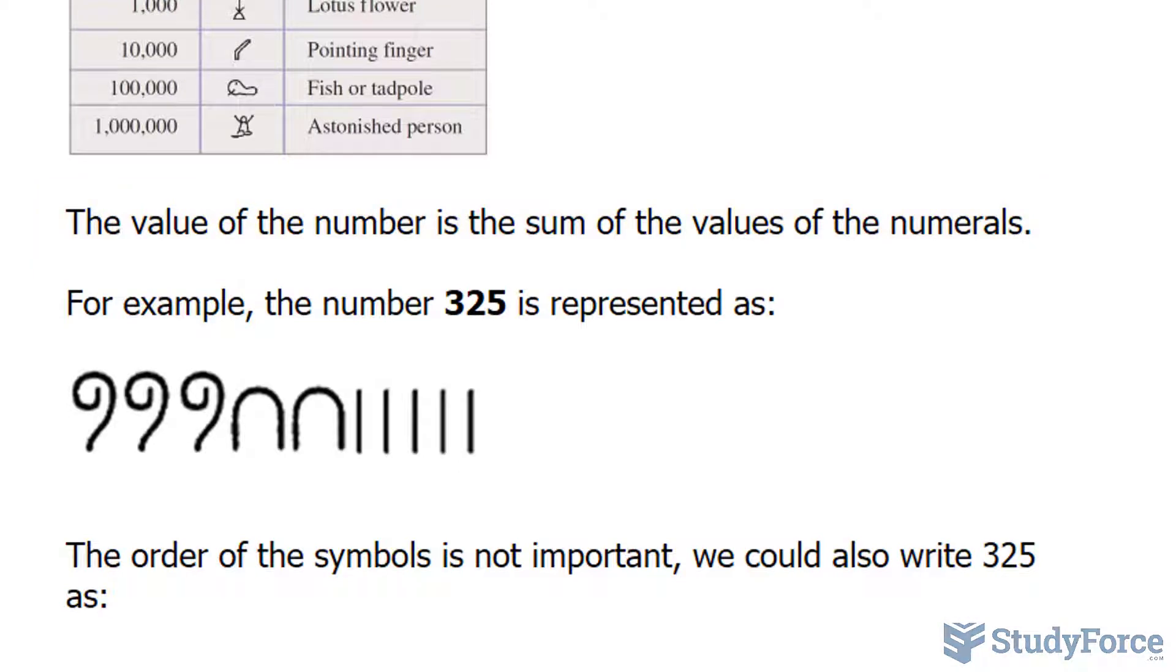For example, the number 325 is represented like this. Notice we have three scrolls that represent the number 300, two of these heel bones that represent two tens, and five strokes that represent the ones.